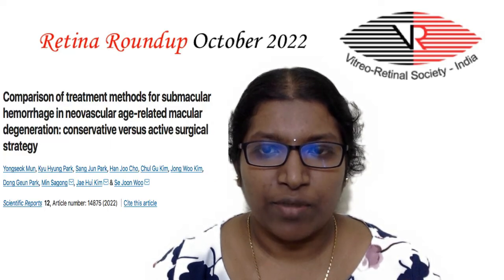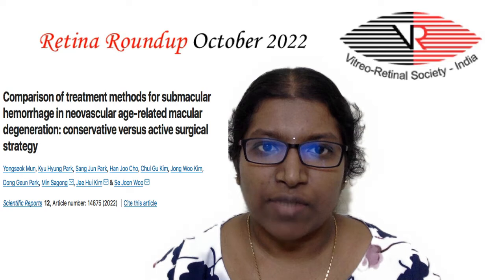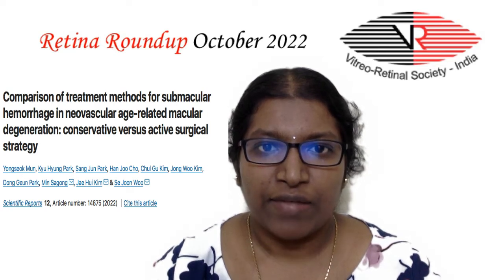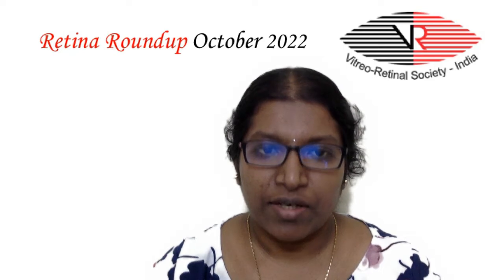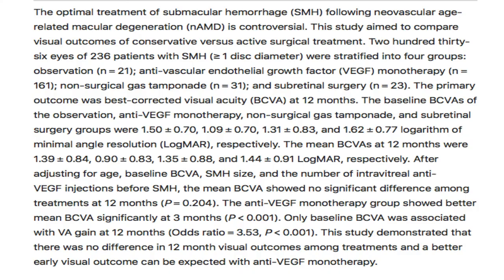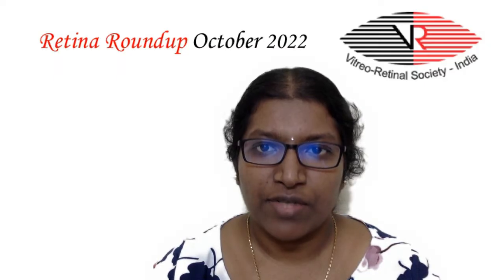Moving on to our next interesting article — a controversial topic: treatment methods for submacular hemorrhage in neovascular AMD, whether conservative versus a surgical strategy. 236 patients with submacular hemorrhage were stratified into four groups: an observation group, an anti-VEGF monotherapy group, a non-surgical gas tamponade group, and a subretinal surgery group.